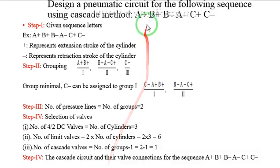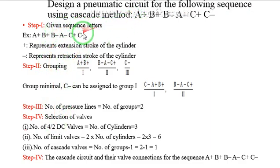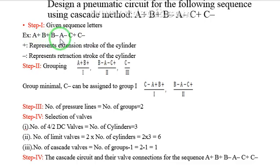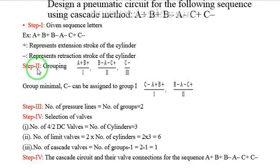Now, design a pneumatic circuit for the given sequence using cascade method. Here four steps are followed. The given sequence letters are: A plus, B plus, B minus, A minus, C plus, C minus. The letters A, B, C represent the number of cylinders — cylinder A, cylinder B, and cylinder C — so three cylinders are used. The positive sign represents the extension stroke of the cylinder; the negative sign represents the retraction stroke. This is our first step. Second step: we have to group them together.